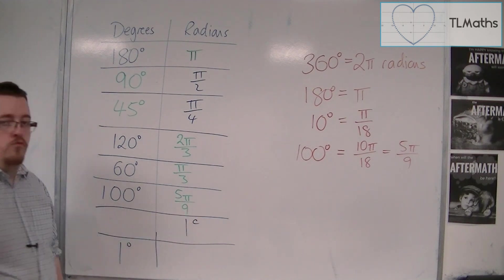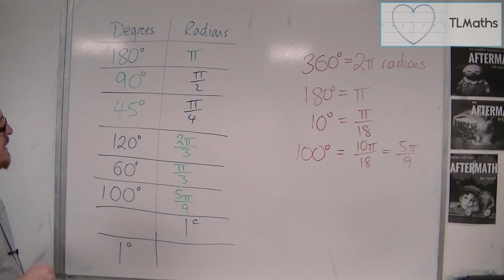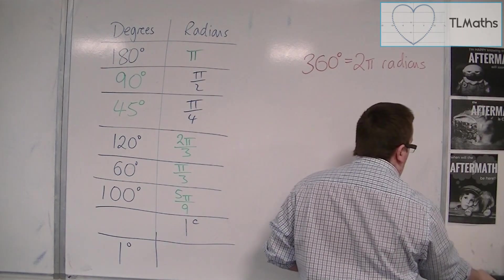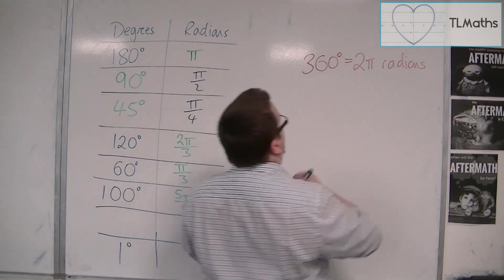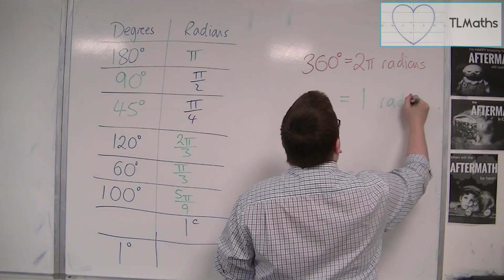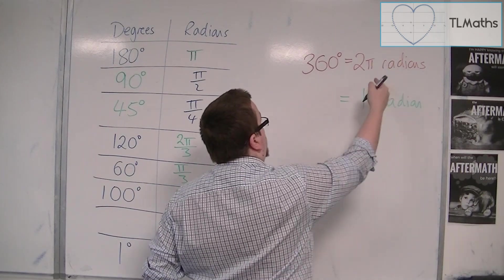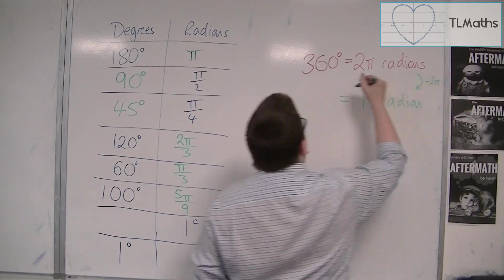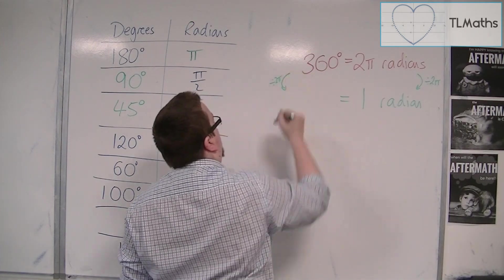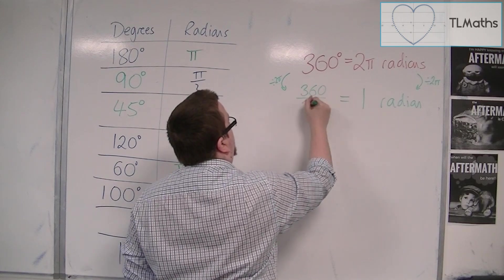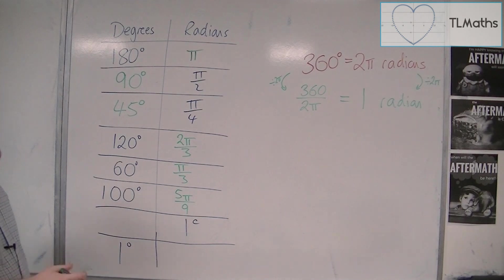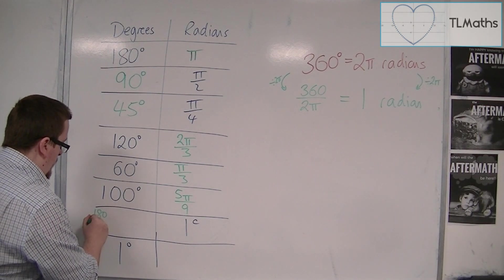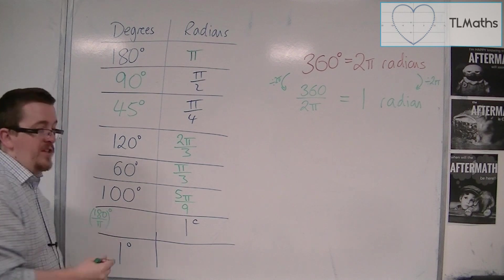Now, 1 radian, that's what we need to find next. So, if we look at the 360 is 2 pi radians again, if I just want 1 radian, then what's happened is I've divided 2 pi by 2 pi in order to get 1. So, effectively, I'm dividing that side by 2 pi, so I must do exactly the same to the left-hand side. And so, this would be 360 divided by 2 pi. So, as an exact value, this is 180 over pi. That's how many degrees it would be.